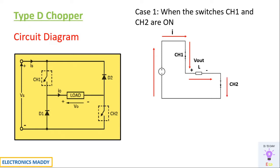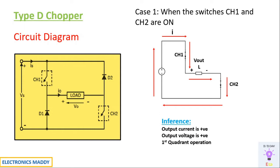Current continues to flow in this direction and comes back to the source. The inferences from this are: output current is positive because it is flowing from the source to the load, and output voltage is positive because it is plus and minus with respect to the load terminals. This clearly indicates it operates in the first quadrant, since both output voltage and output current are positive.